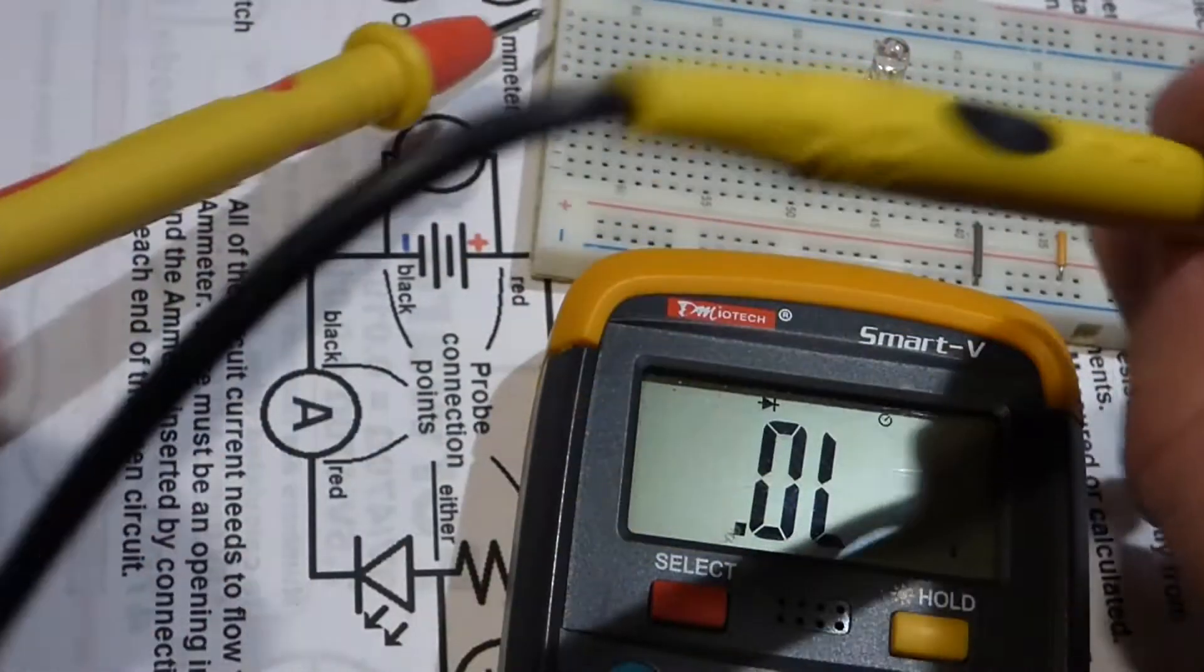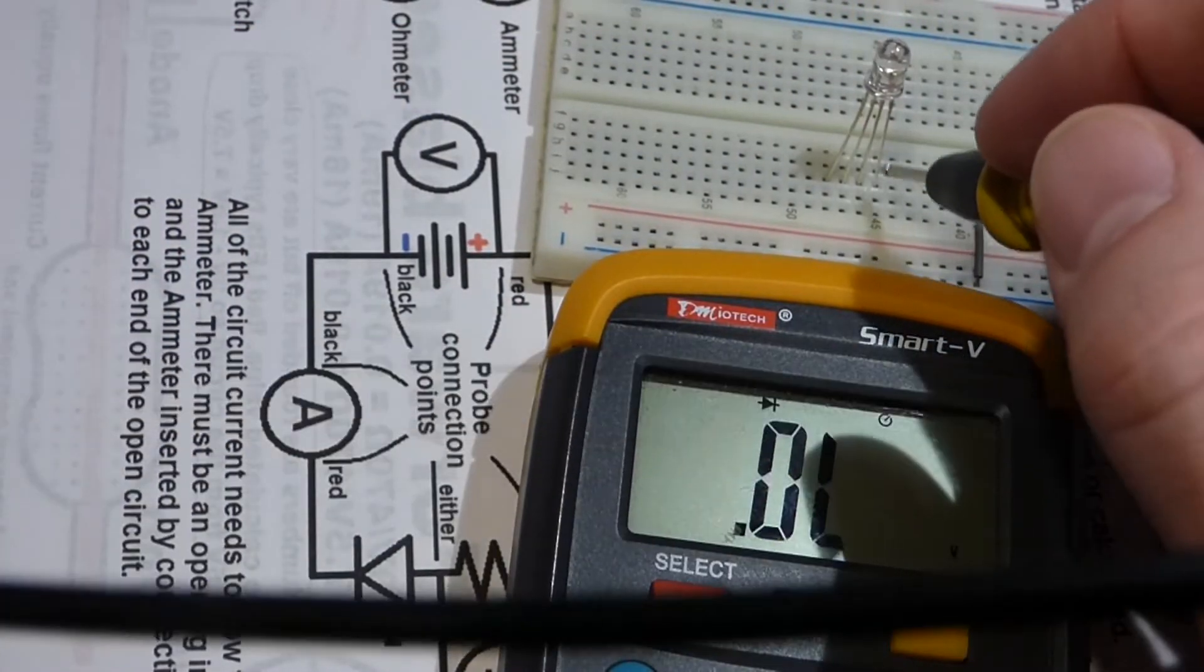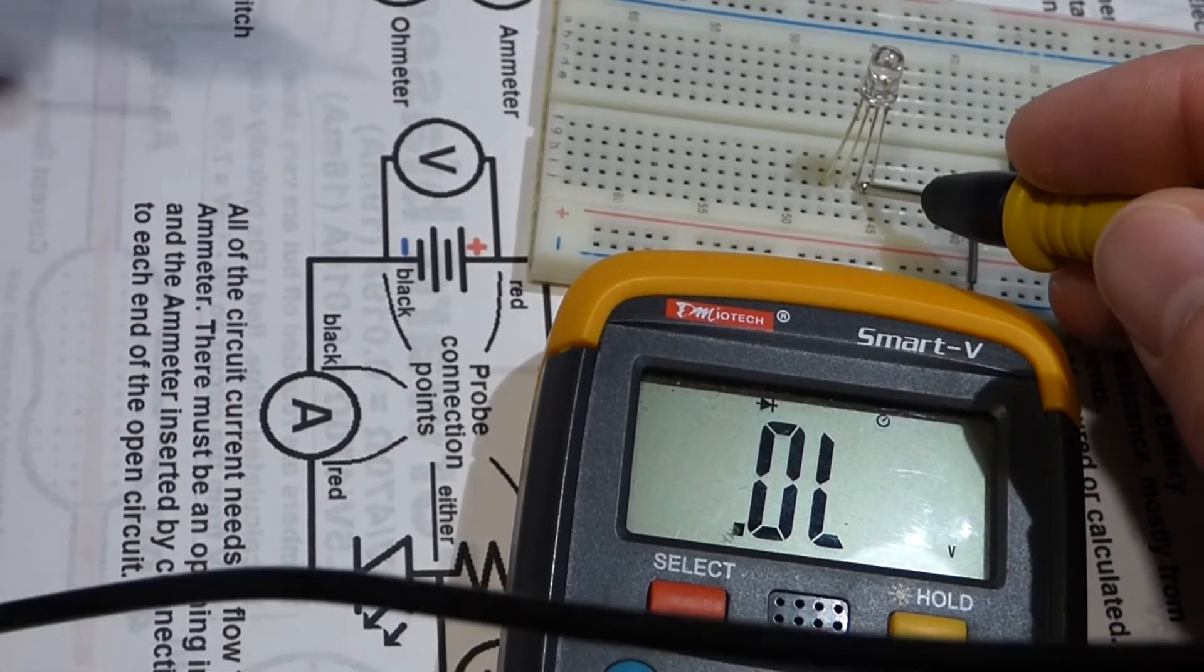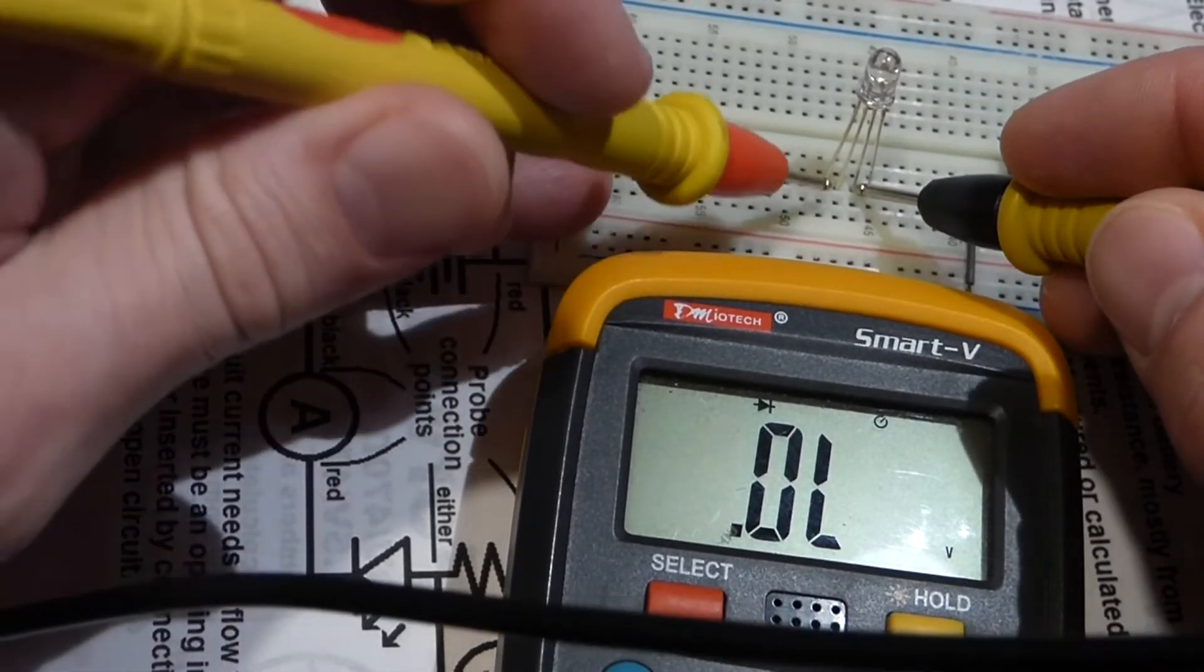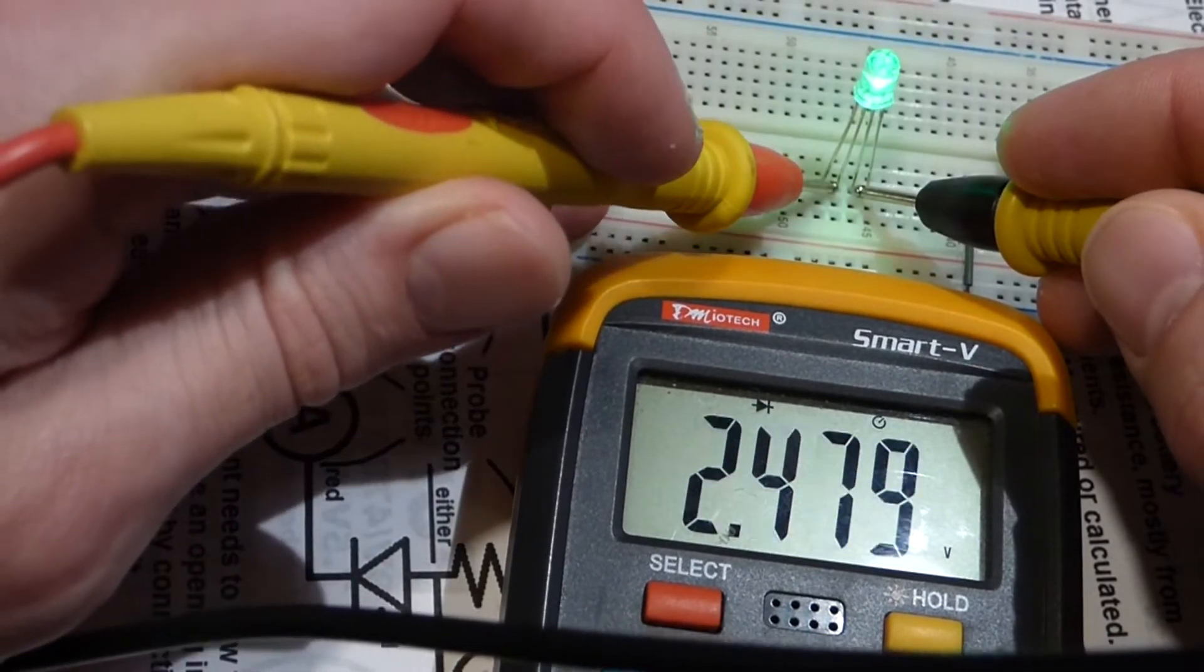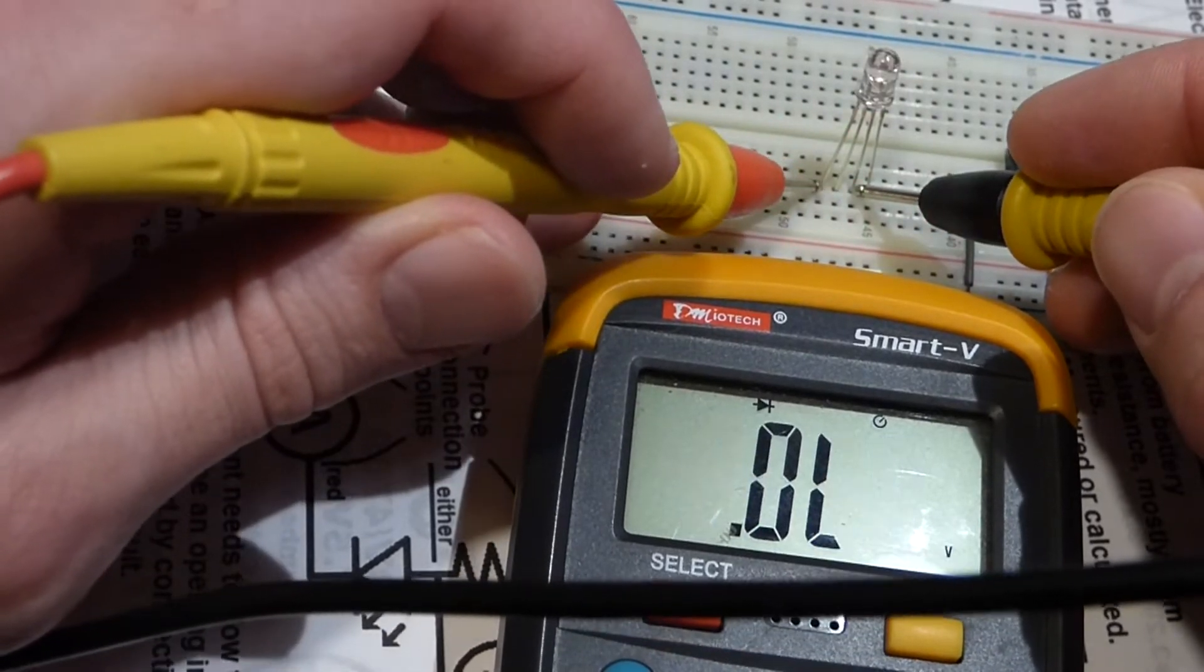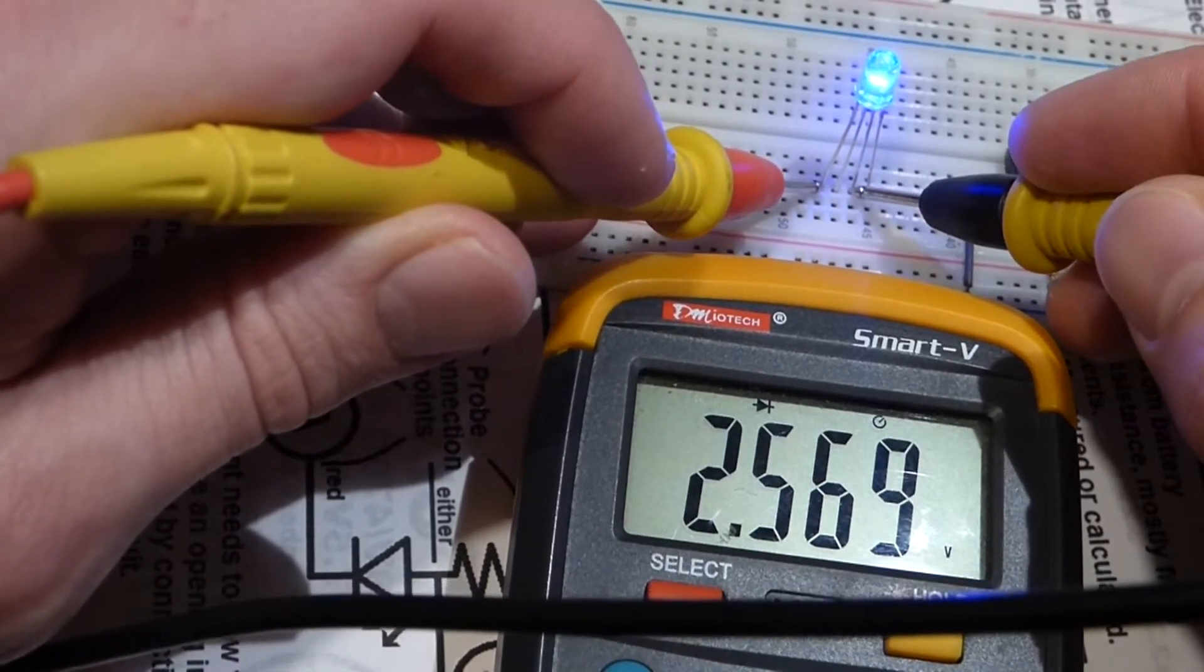Now let's swap these. Second right terminal again we'll put the black test probe. The red one will go to the other pin right next to it. And you see we get a green LED light up. And then we'll go to the farthest one and a blue one.